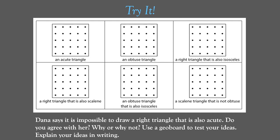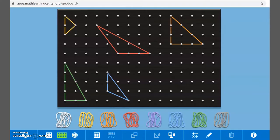You're going to make six triangles: an acute triangle, an obtuse triangle, a right triangle that is also isosceles, a right triangle that is also scalene, an obtuse triangle that is also isosceles, and a scalene triangle that is not obtuse. Then look at the challenge problem: Dana says it is impossible to draw a right triangle that is also acute — do you agree with her? Why or why not? Use the geo board to test your ideas, then explain in writing.